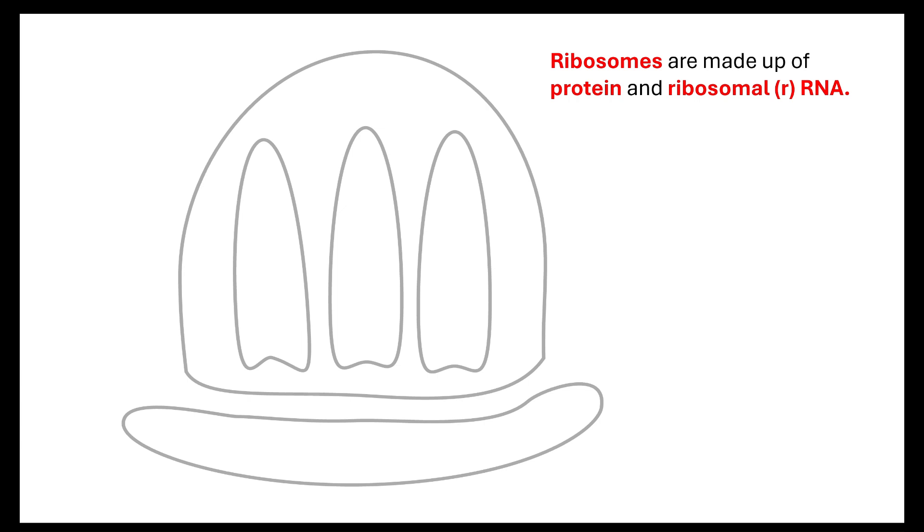Now, your ribosomes are actually made up of protein and ribosomal RNA. Now, remember, RNA means that it is a ribosugar attached to a nitrogenous base with a phosphate. So, we're talking about a polynucleotide. So, this is a ribosomal polynucleotide.